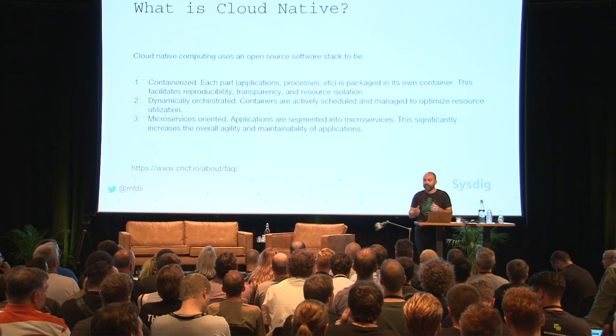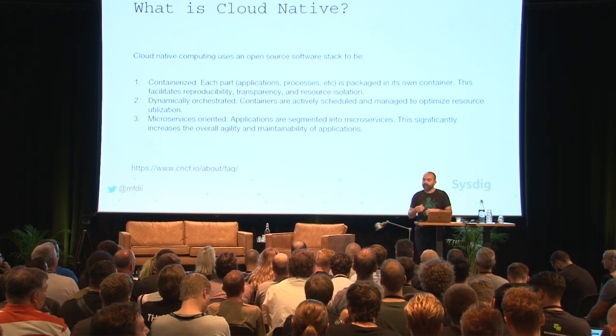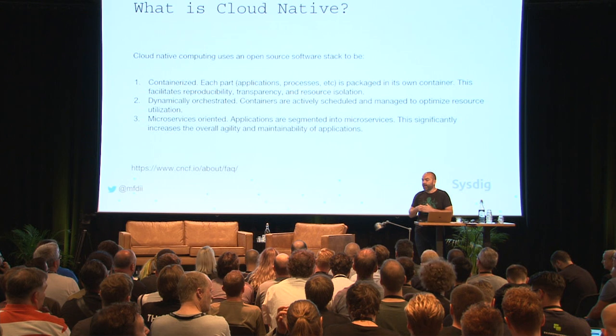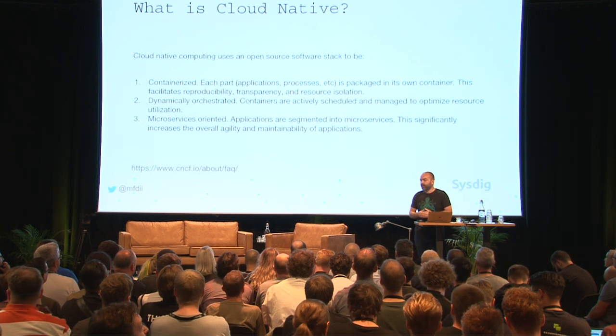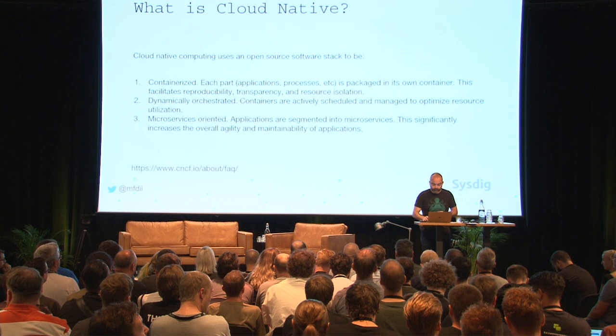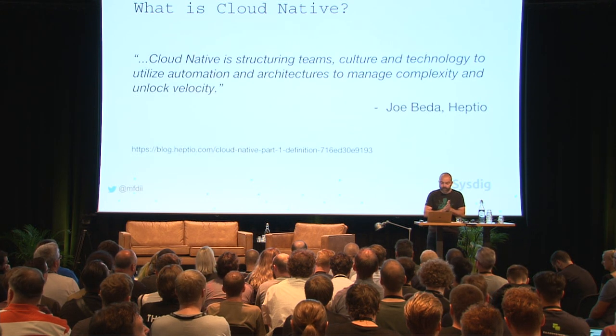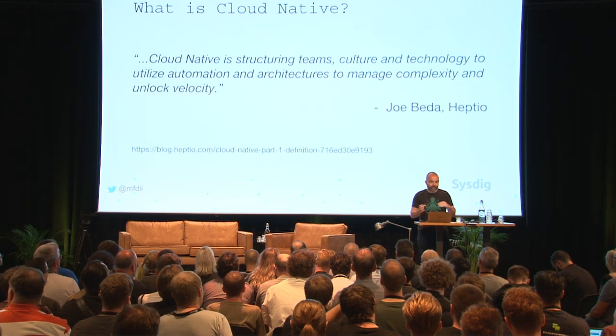This is actually the older definition from the Cloud Native Computing Foundation — they've updated it within the past week or so — but it's a good technological definition of what cloud native means: 'Cloud native computing uses an open-source software stack to be containerized, dynamically orchestrated, and microservices oriented.' This is very much an architectural pattern. It's not necessarily about processes, but it defines the technology stack for an application that can be operated in a cloud native fashion.